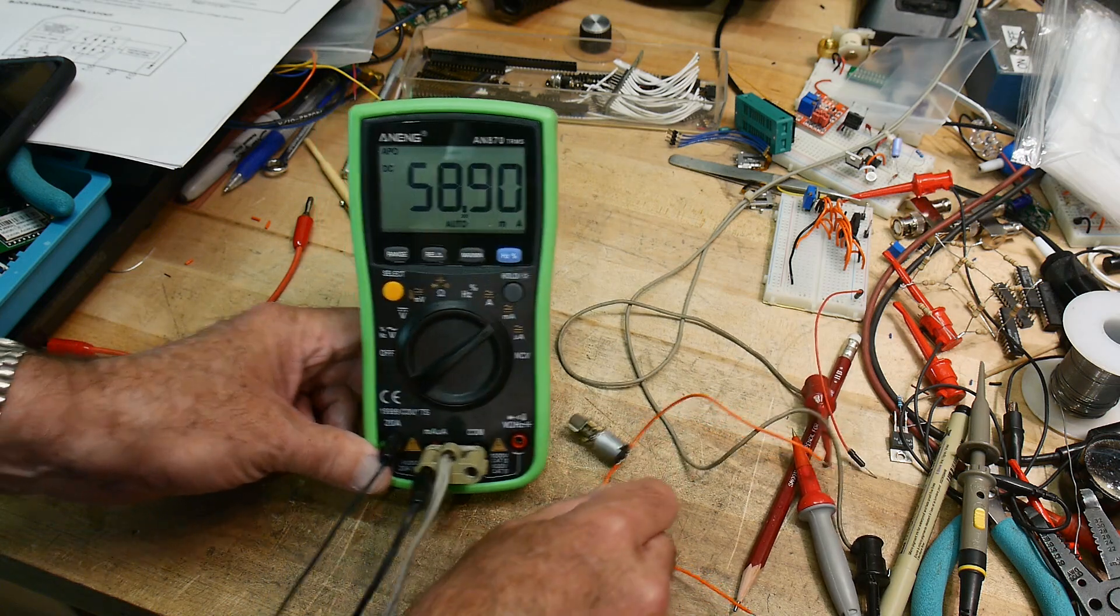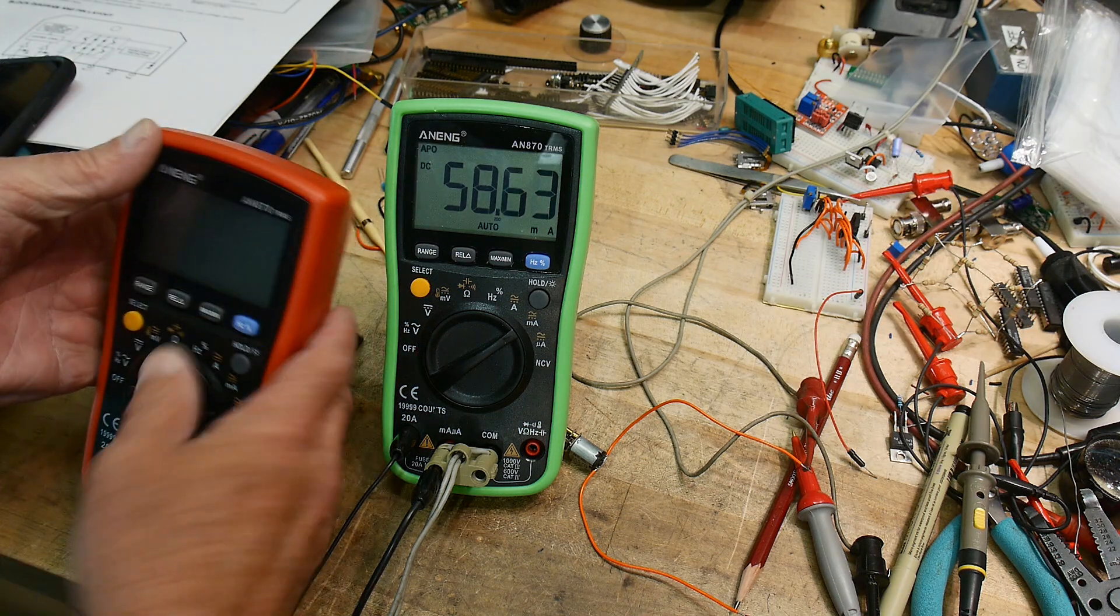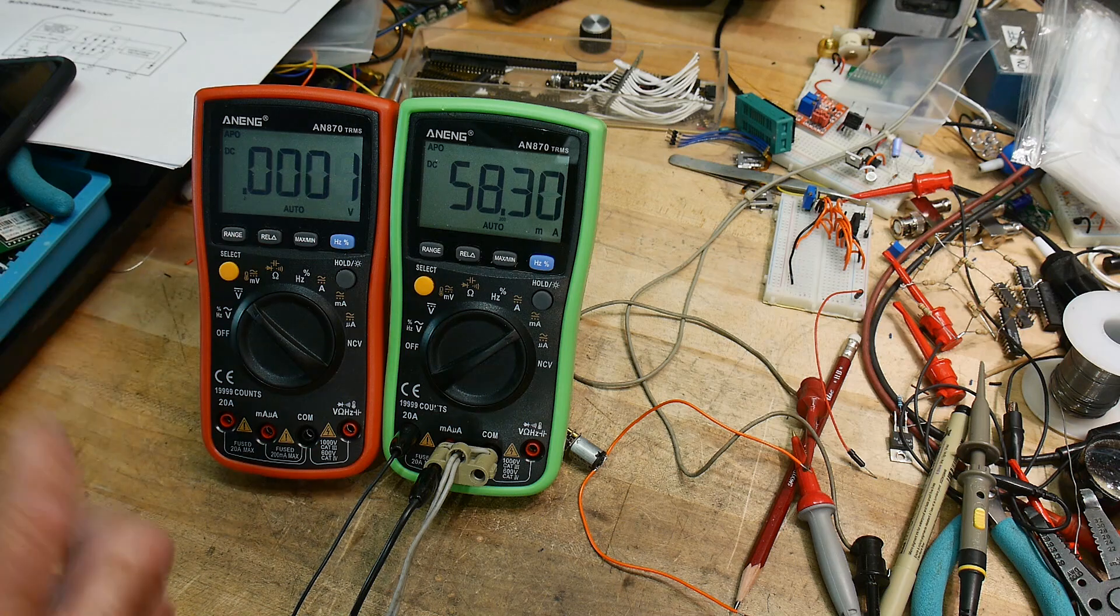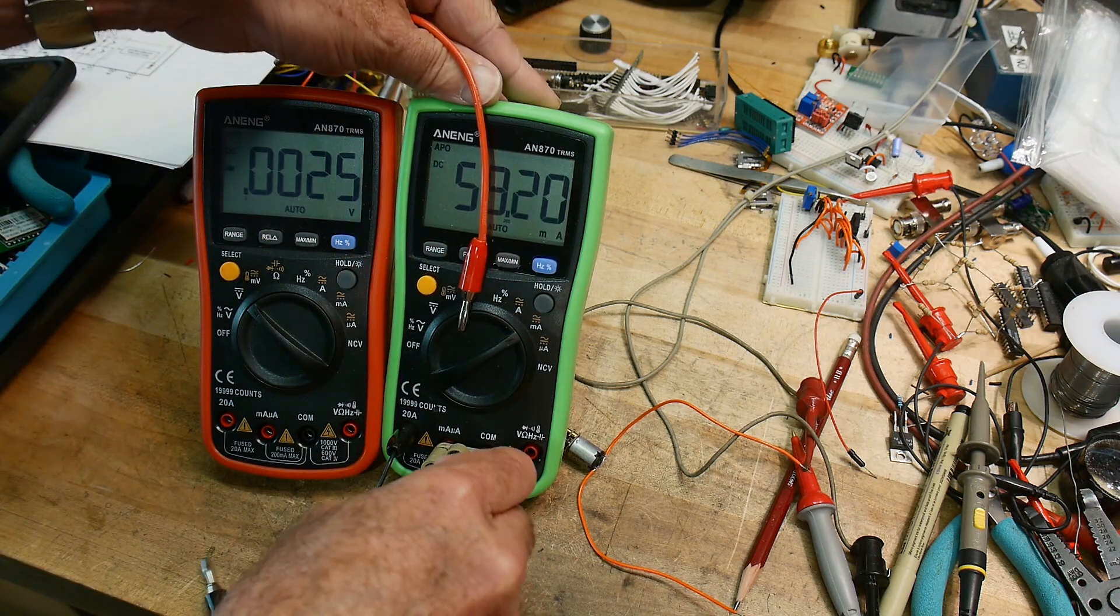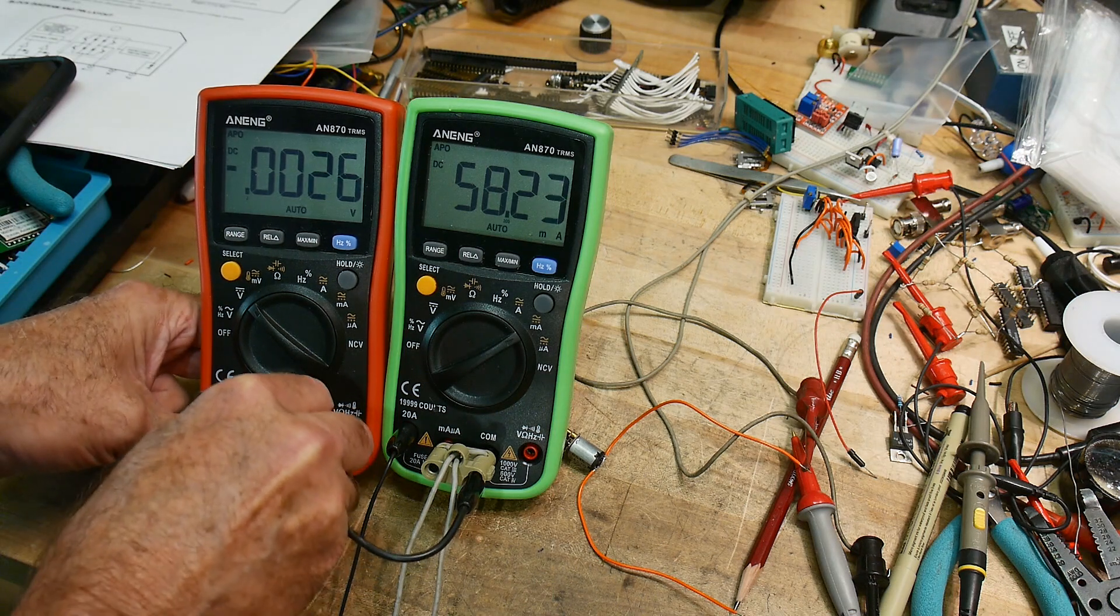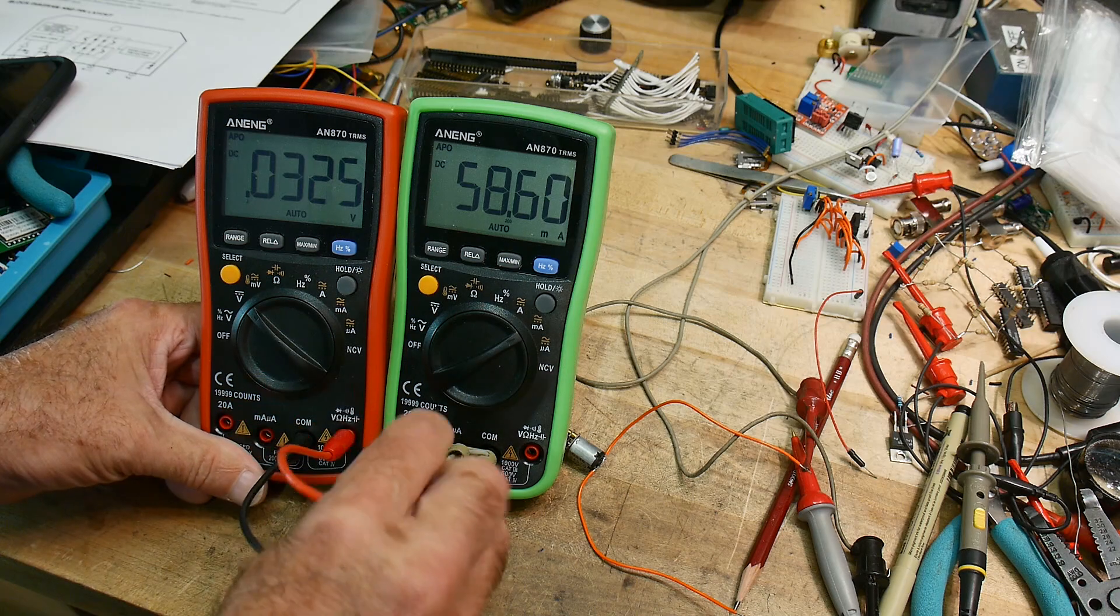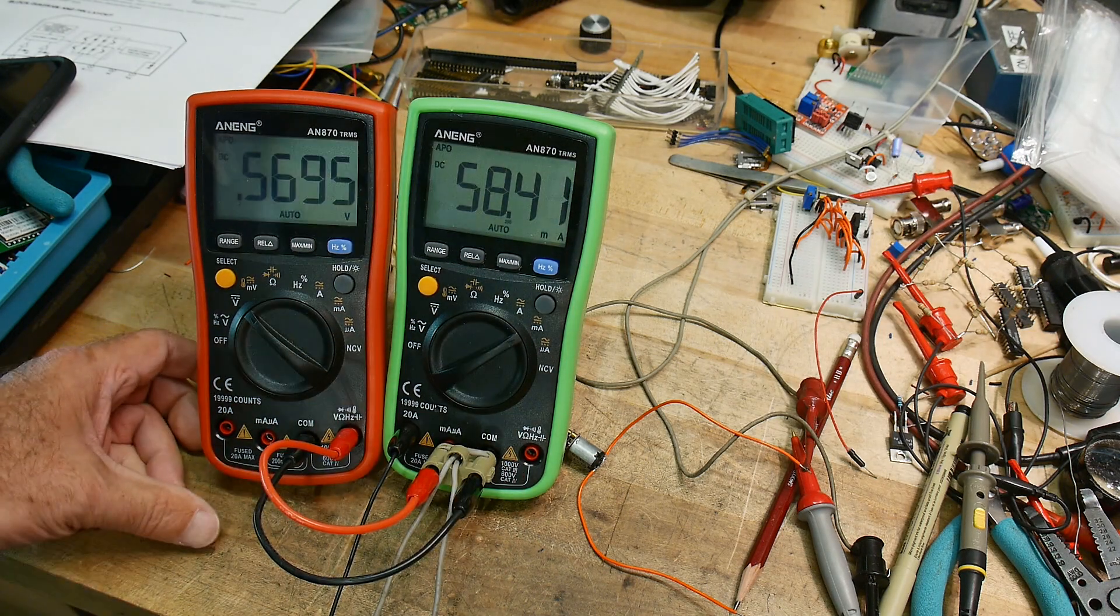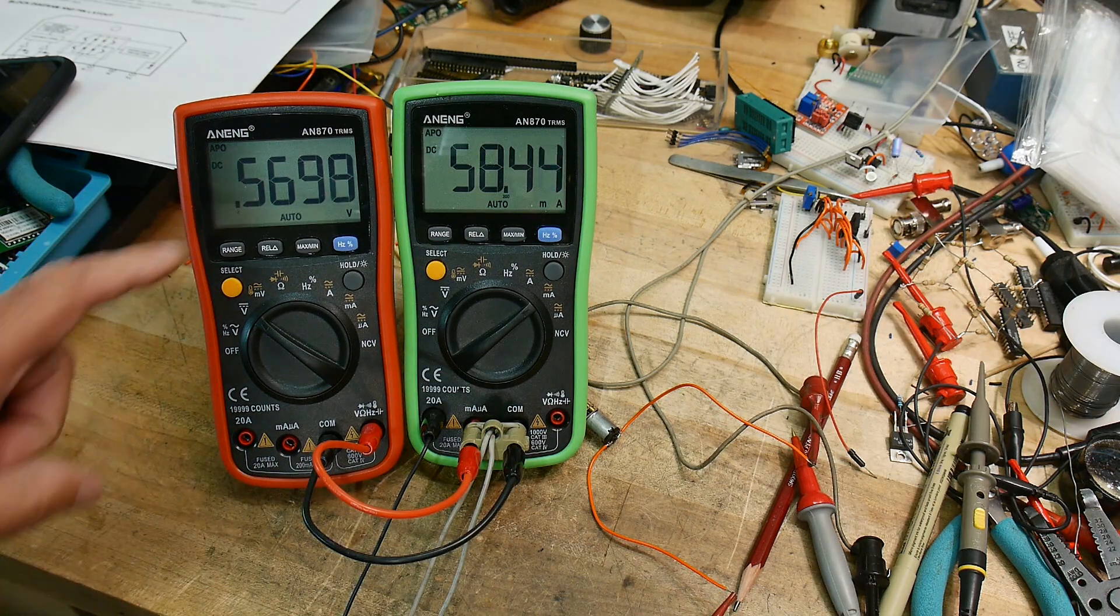All right, so let's get out a second meter. This will be our volts meter, right? And so we will measure the voltage across our current measurement. I'm in the way of the meter lighting.